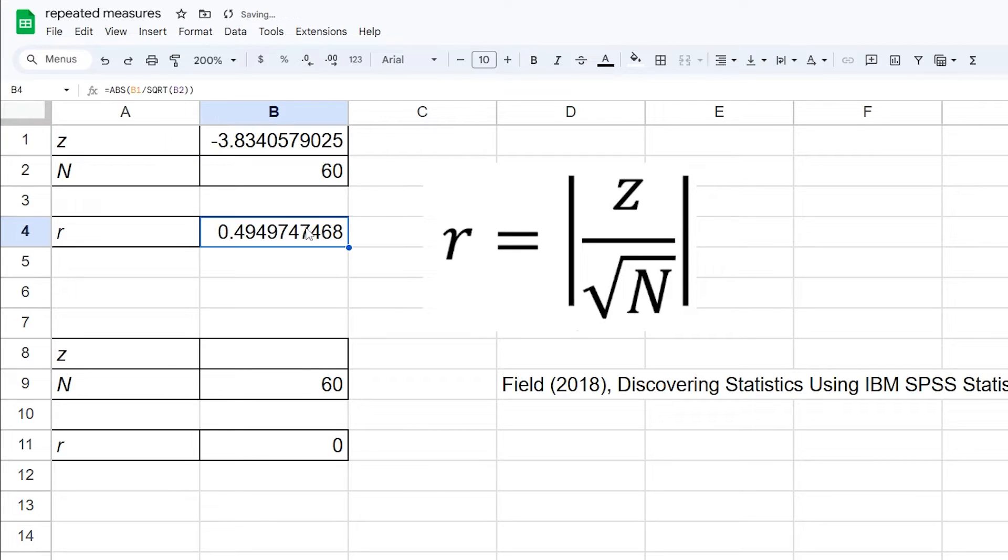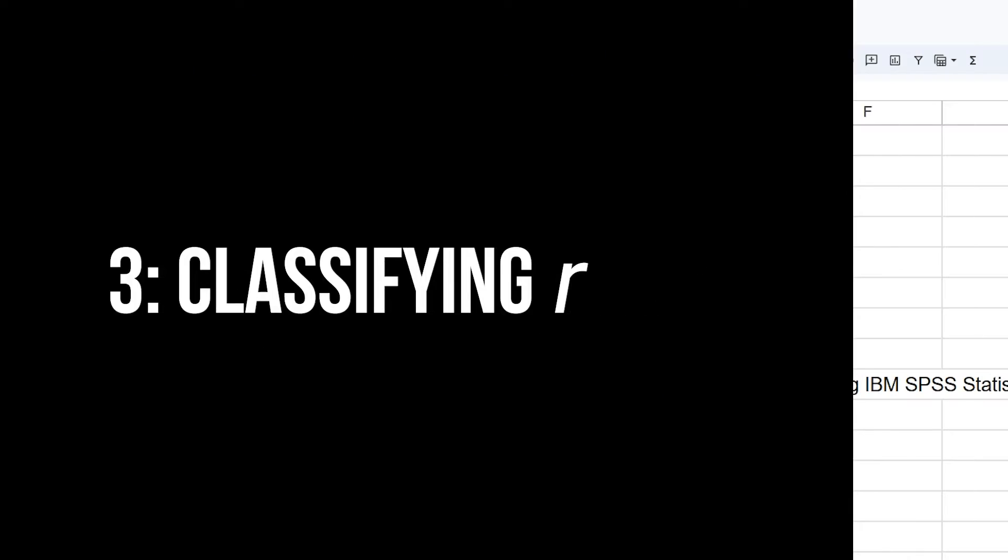The resulting effect sizes R have values of 0.495 and 0.636 rounded to three decimals. Finally, you need to classify the magnitude of those effects.